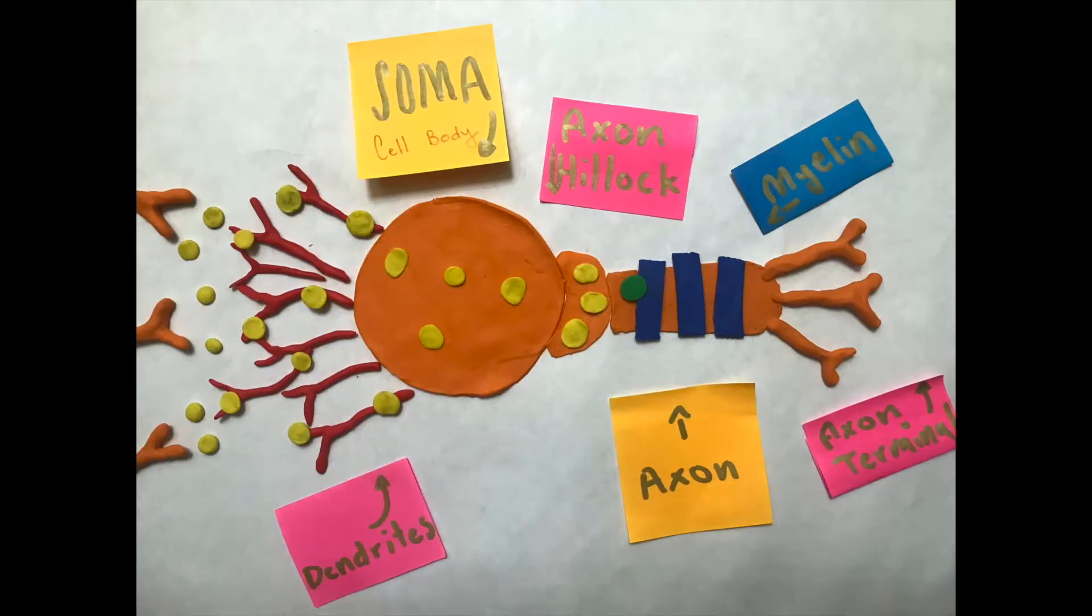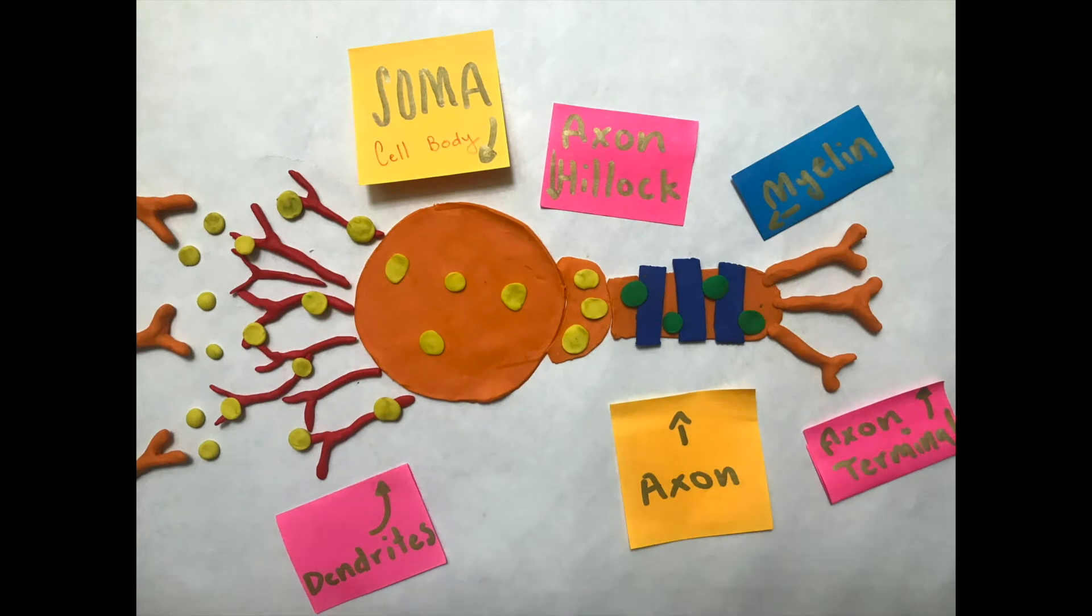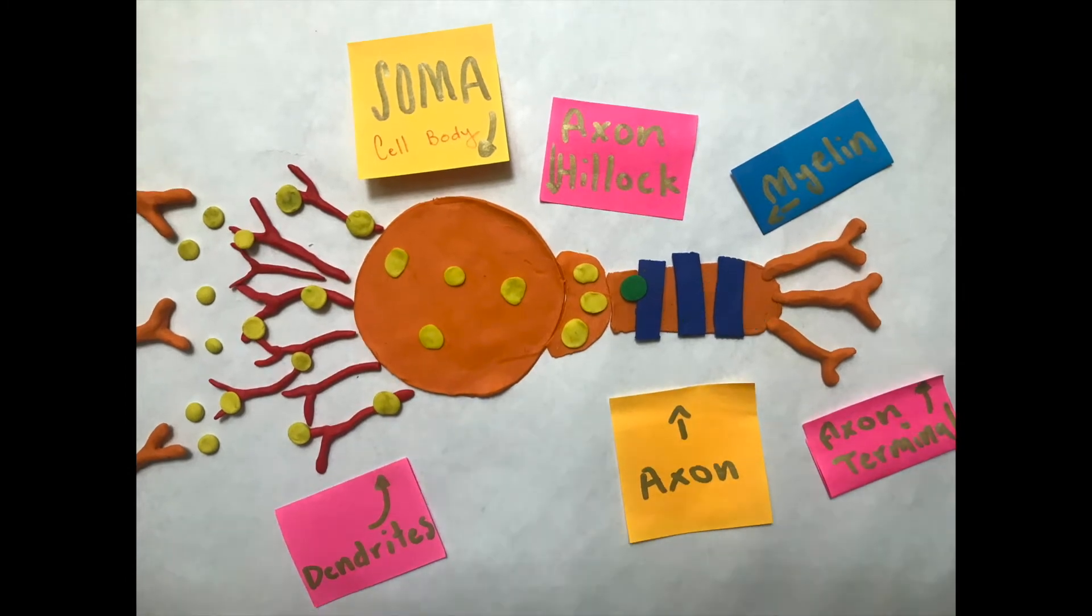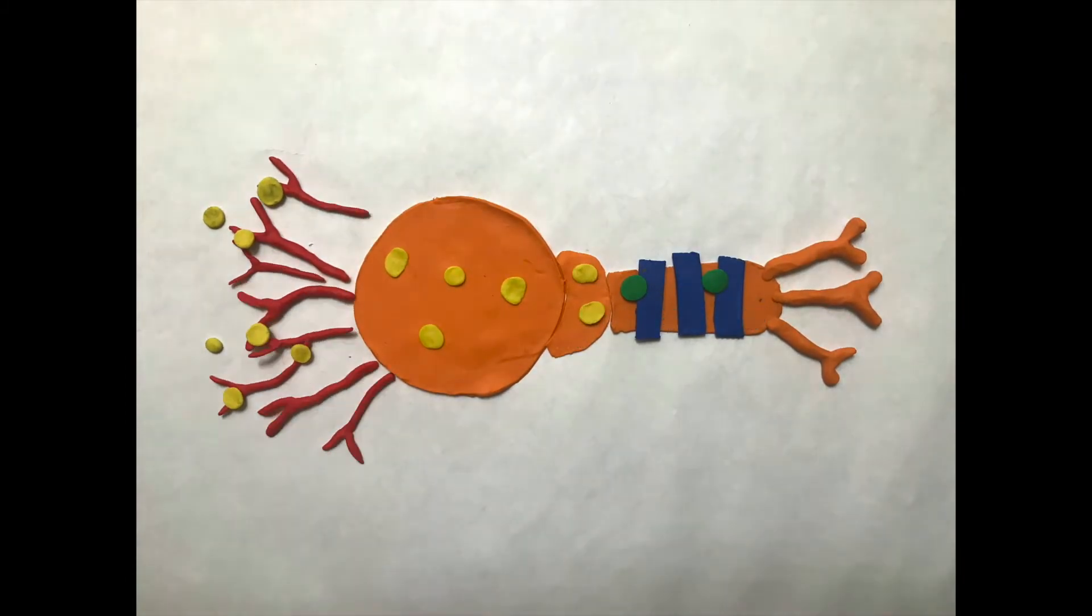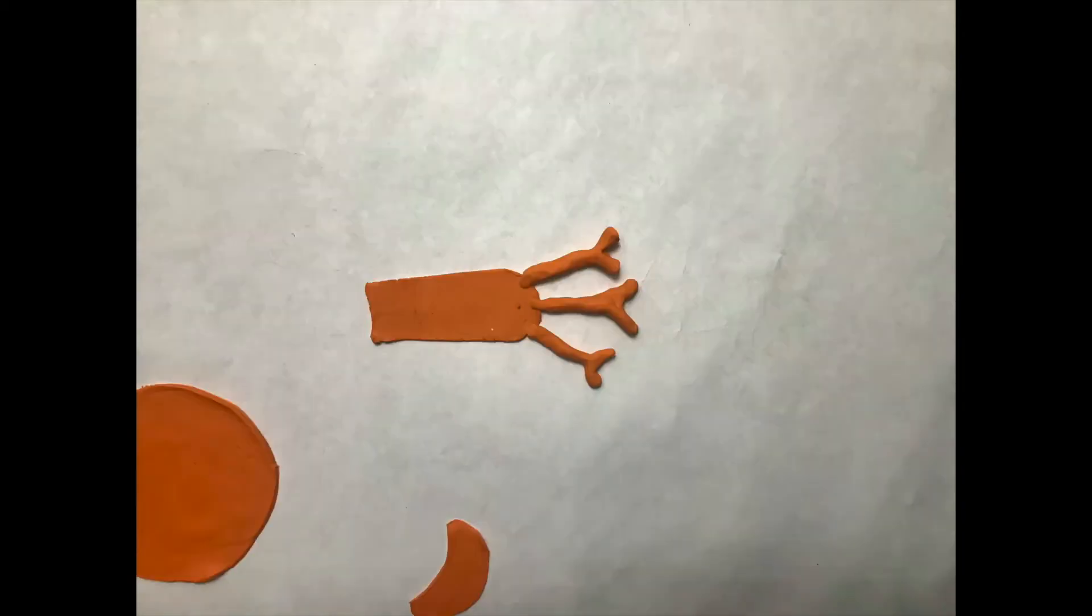The action potential travels down the axon with myelin surrounding the axon to protect the signal from degrading. The action potential then reaches the axon terminals,